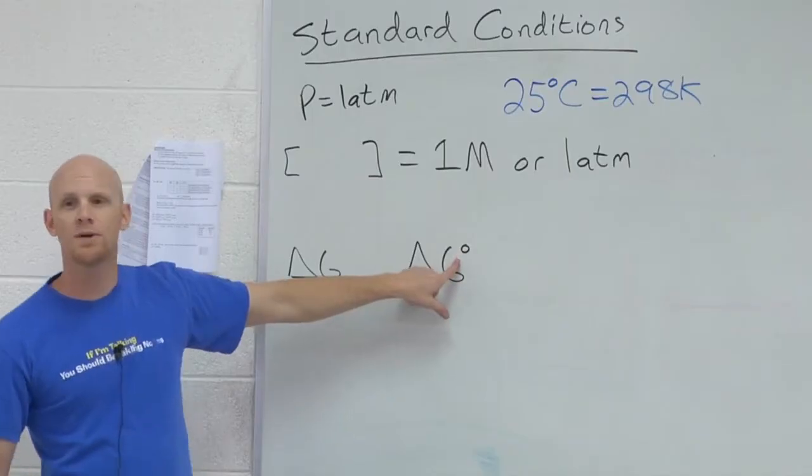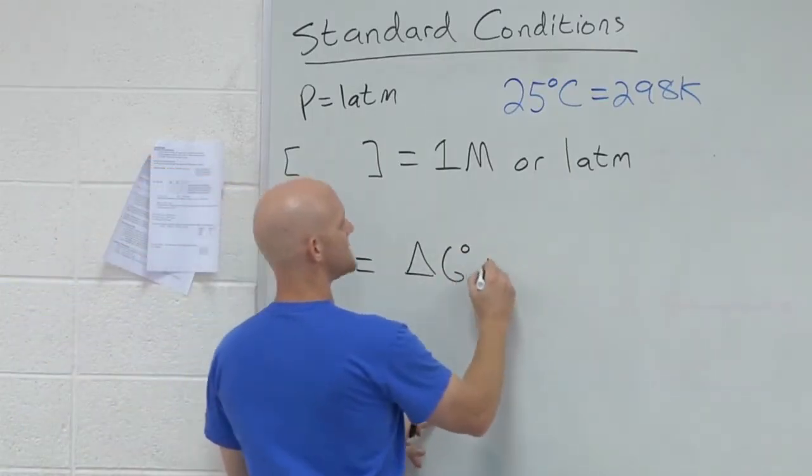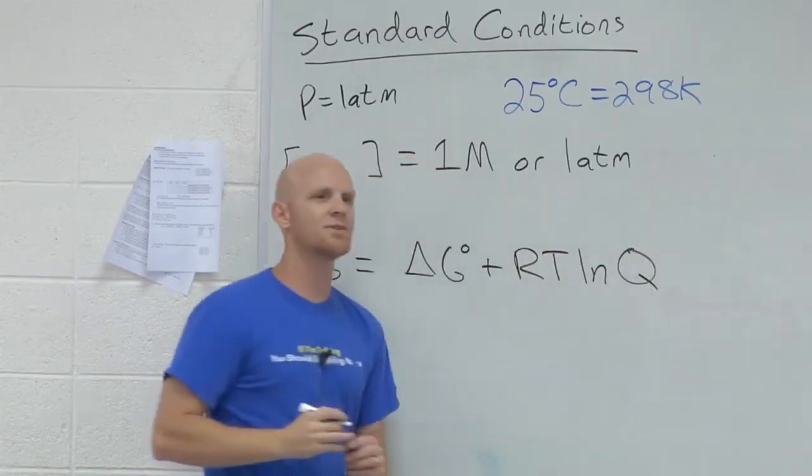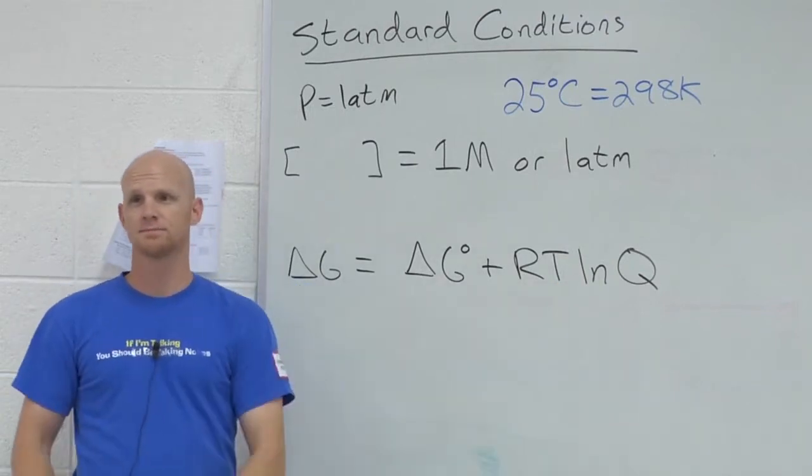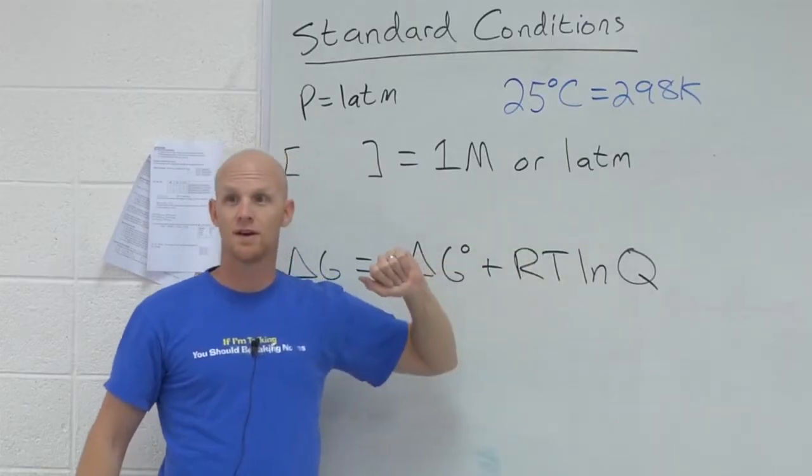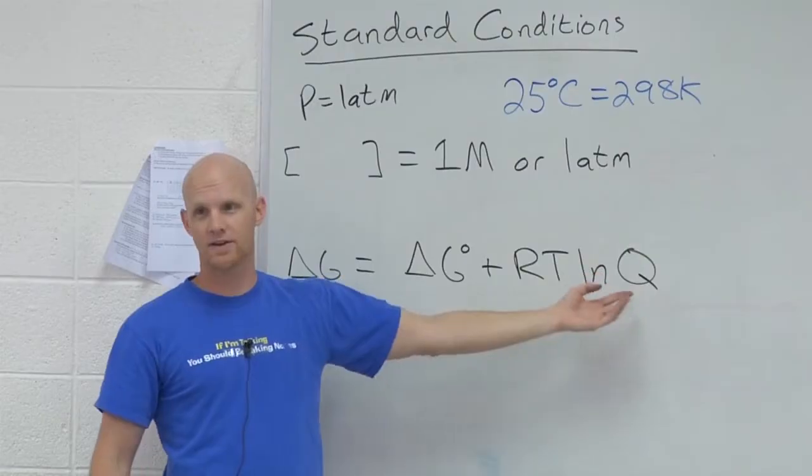Well, you still look up that value in a book. And then they tell you to add this fudge factor to account for any conditions that are not standard. You can put in a different temperature. And then Q, the reaction quotient, products over reactants, you can put in all the concentrations. And so if they're not one, that'll get factored in.